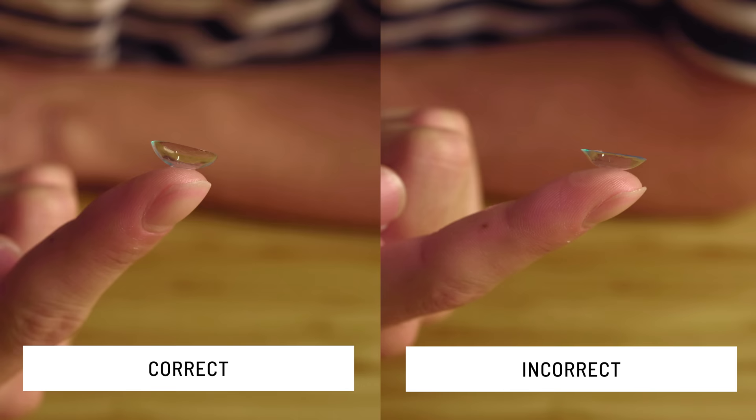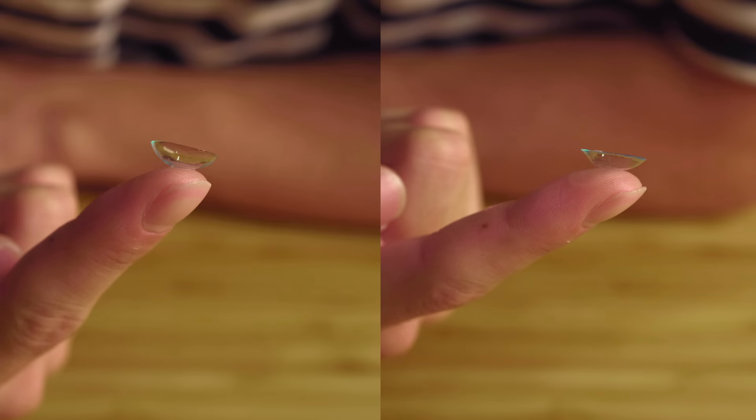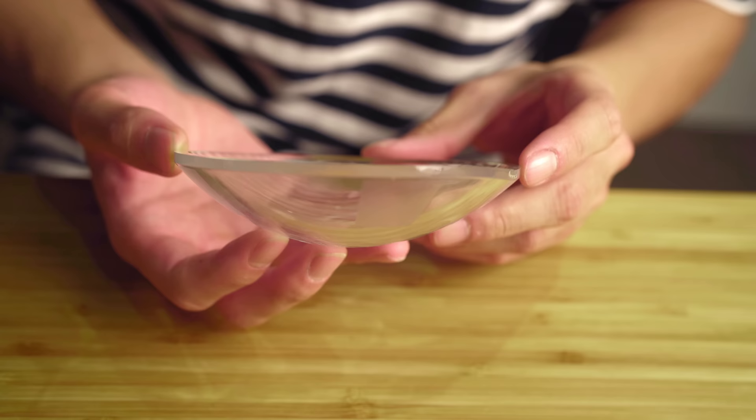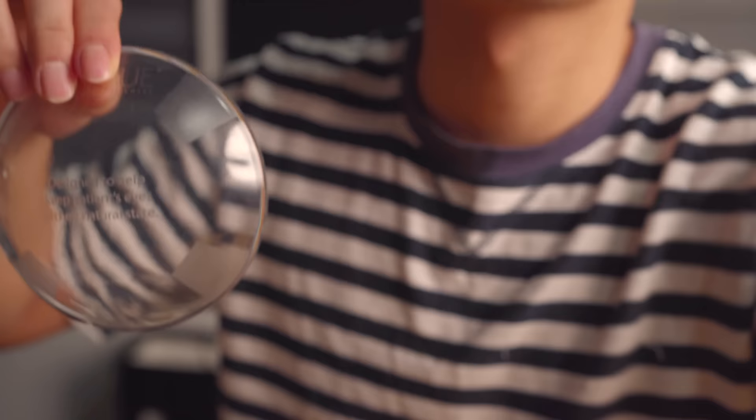If you find that your contact lenses look more like a taco rather than a bowl, then all you have to do is flip the lens inside out. If you're a beginner, then spotting these differences are going to be very difficult, but luckily in 99 cases out of 100, the lens will be positioned in the bowl formation straight out of the packaging.